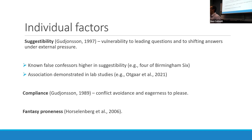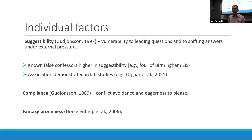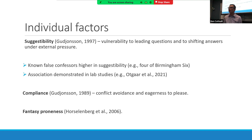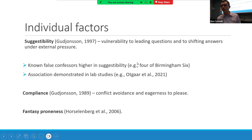Factors making pressured compliance false confessions more likely include suggestibility — a trait referring to how vulnerable you are to leading questions, other people's opinions, and shifting your own opinion under external pressure. Gudjonsson has a scale for measuring suggestibility, and those scoring higher are more likely to false confess in lab studies. In a field study, four of the Birmingham Six who falsely confessed scored higher on this scale than the two who didn't confess.